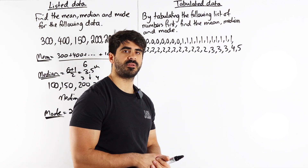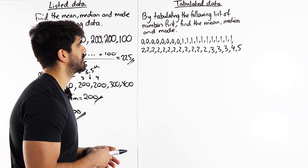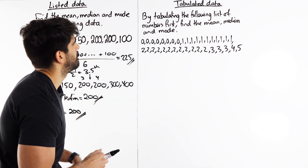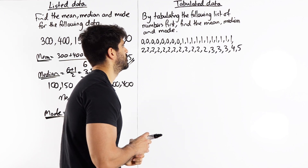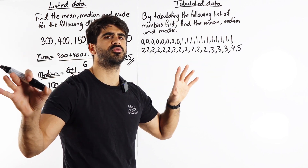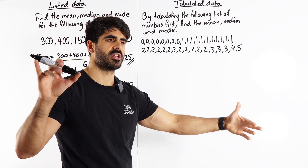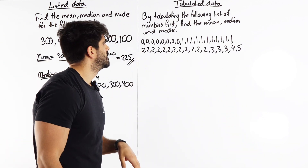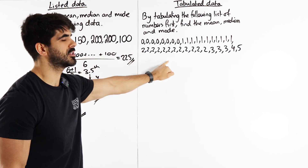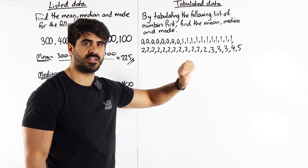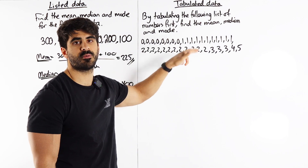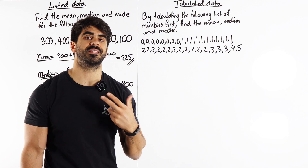Now, tabulated data. This is very common at GCSEs. I want to show you why it's important to understand where the tables come from. By tabulating the following list of numbers, find the mean, median, and mode. If you wanted to find the mean of a dataset with lots of repeated numbers — doing 0 plus 0 plus 0 plus 0 many times — you can see that's really tedious. This is why we tabulate the data.